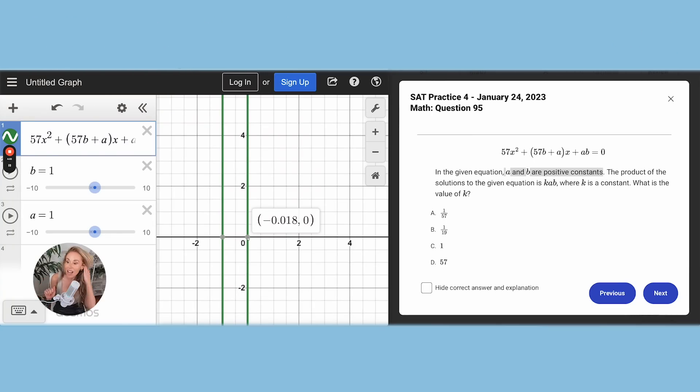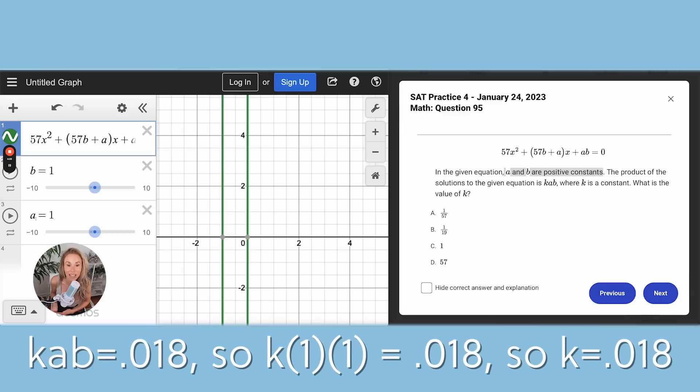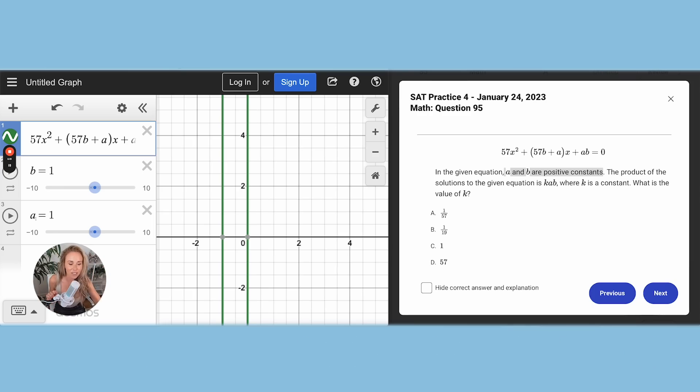Okay, if A and B are one, and then we multiply by k, that means k is going to have to be equal to 0.18. Because one times one times 0.18 will get us the product of the solutions, which is 0.18.